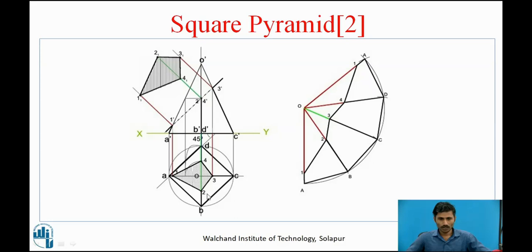Without cutting, this is the apex of the square pyramid at full height — this is the front view. In the top view, the O point is the apex point. From O to O-dash is the axis height. From the top view we cannot see the height of the axis, so it appears as a point. From apex point O, we connect all base corners: O to A, O to B, O to C, and O to D. These are the inclined edges seen from the top view as apparent lengths.